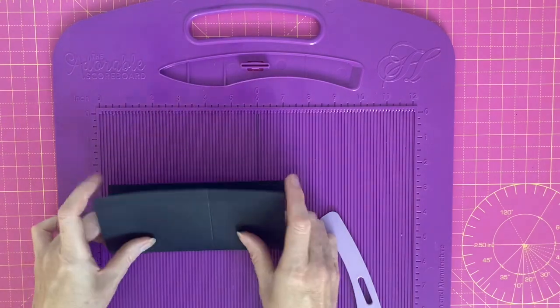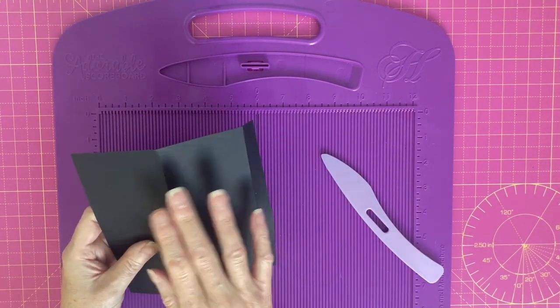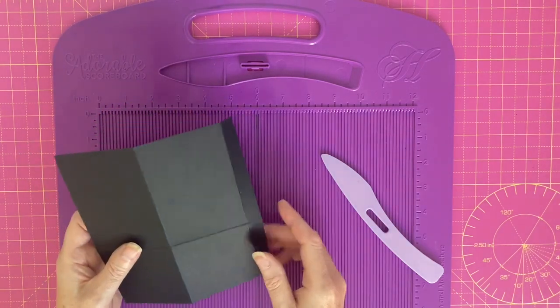We're going to fold and burnish the score lines so this is going to form part of the sides of the box and this will form part of the bottom of the box.